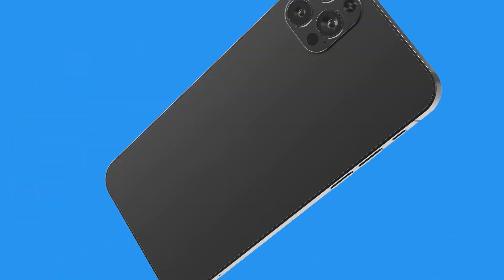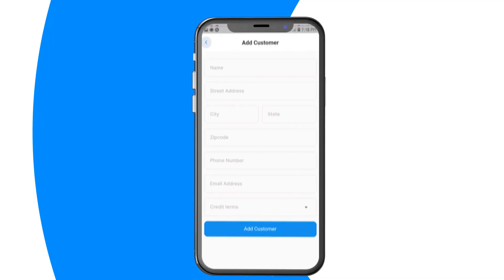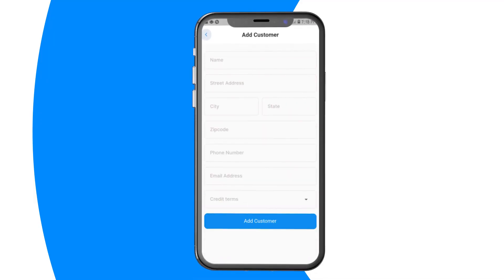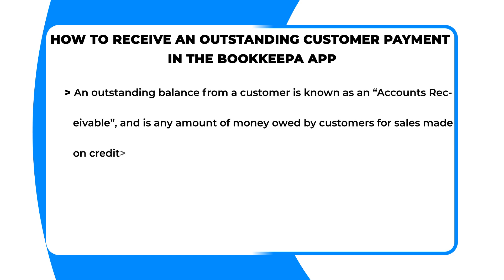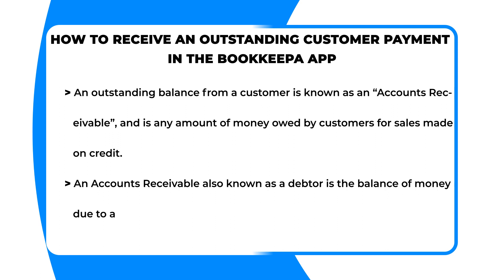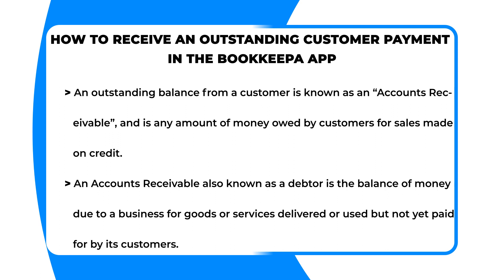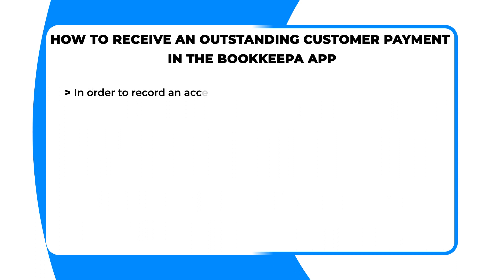In this video I want to teach you how to receive an outstanding payment from a customer in the Bookkeeper app. An outstanding balance from a customer is known as an accounts receivable, and is any amount of money owed by customers for sales made on credit. An accounts receivable, also known as a debtor, is the balance of money due to a business for goods or services delivered or used but not yet paid for by its customers.